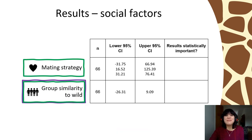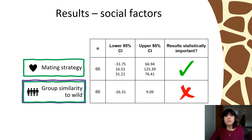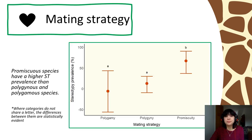Finally, examining the impact of social factors: mating strategy was found to influence stereotypy prevalence. However, whether an animal's social environment was similar to that of their wild counterparts did not play a role. The prevalence of stereotypy is higher in populations of promiscuous species than in those that practise polygamy or polygyny.